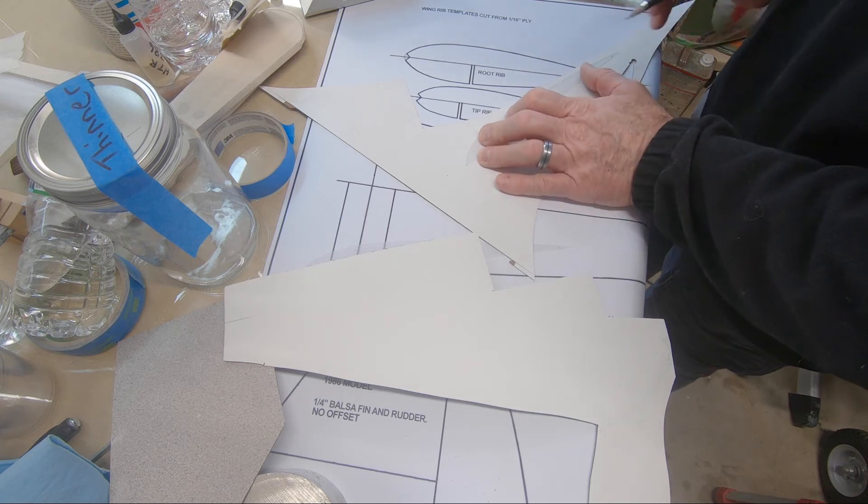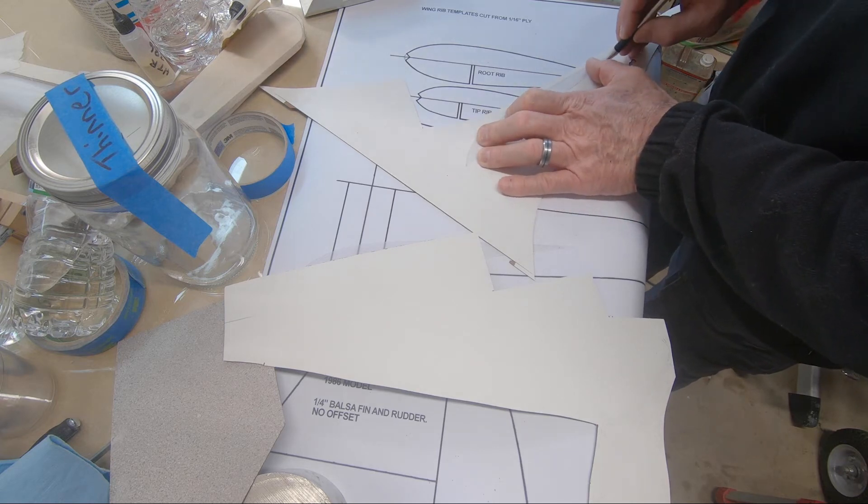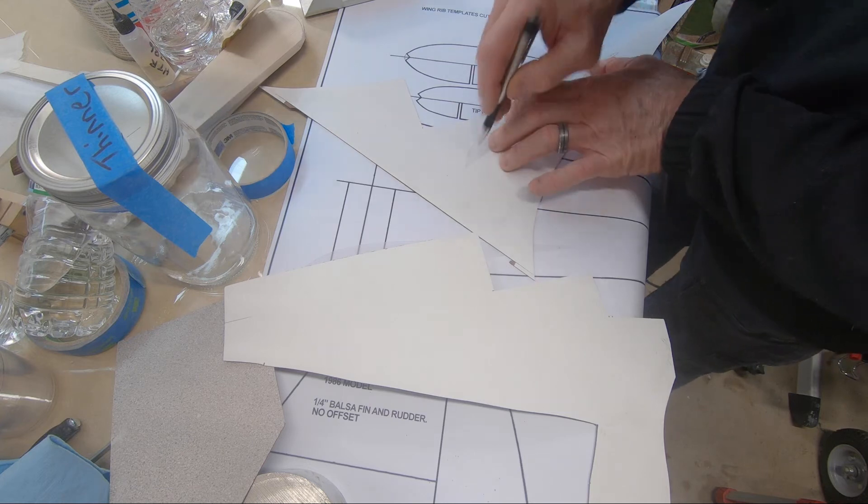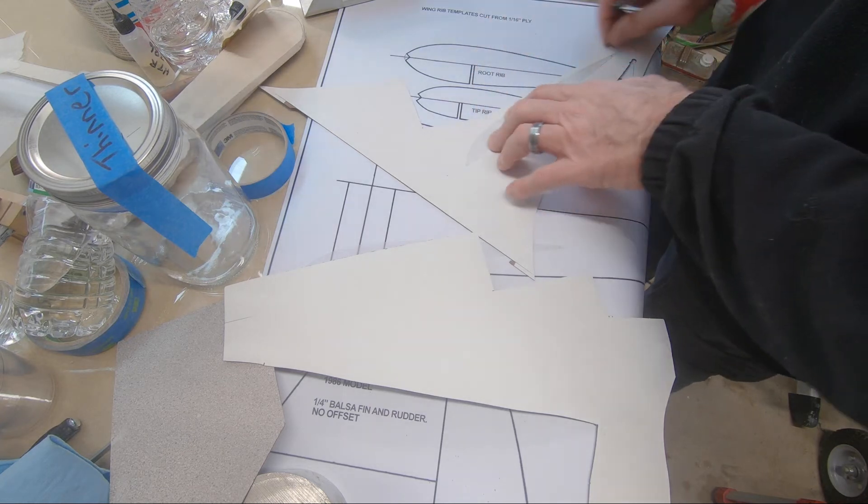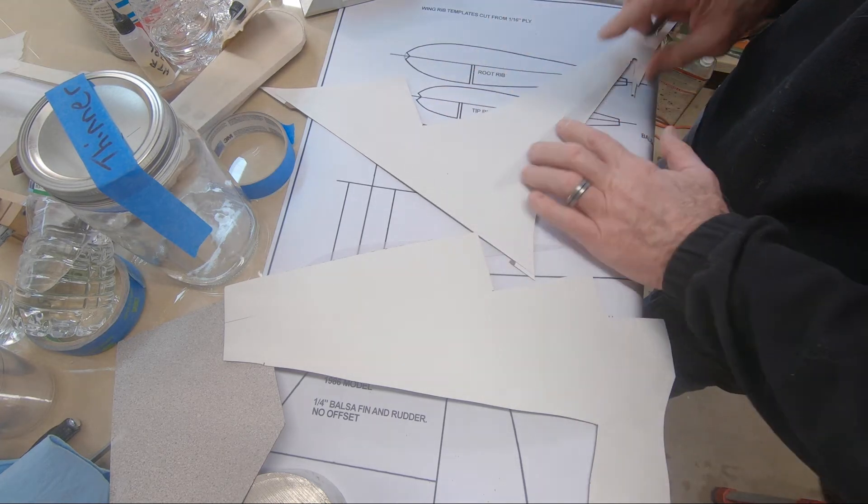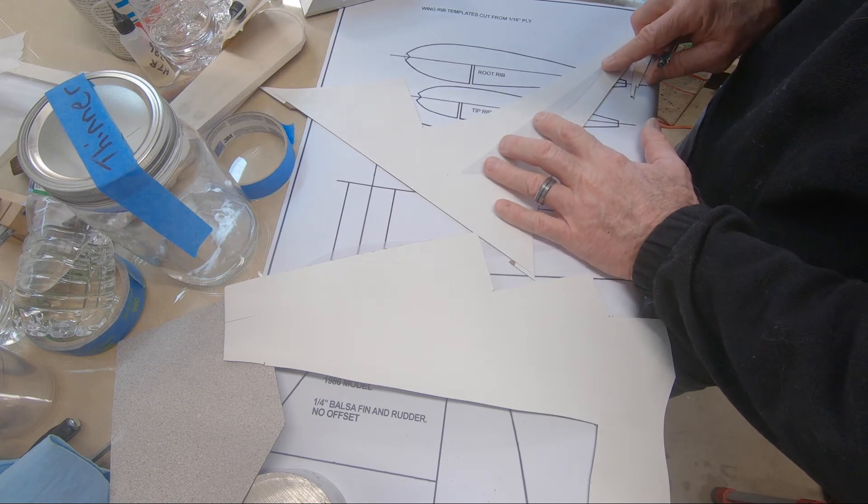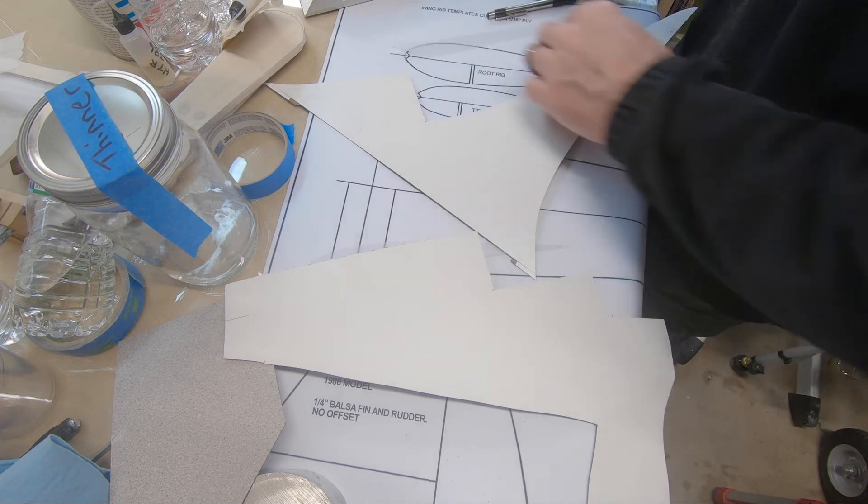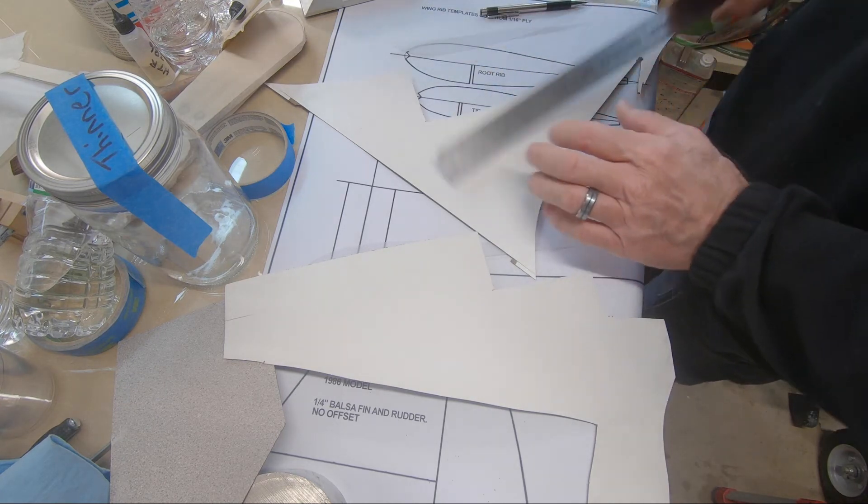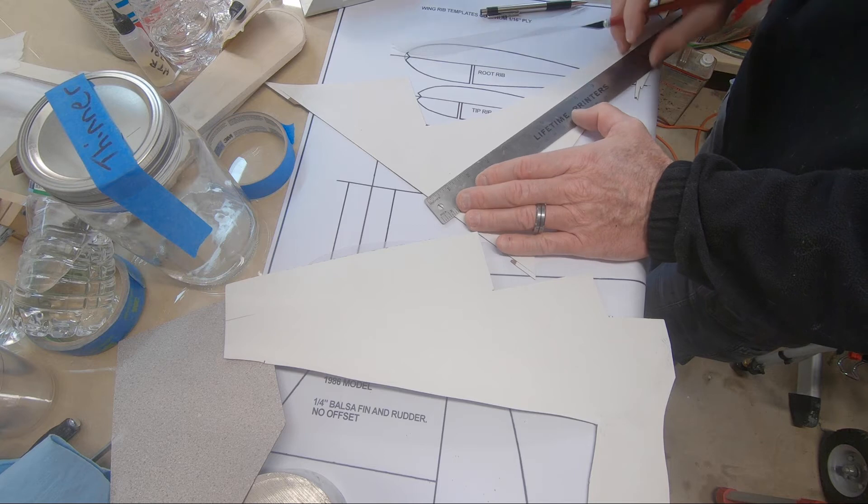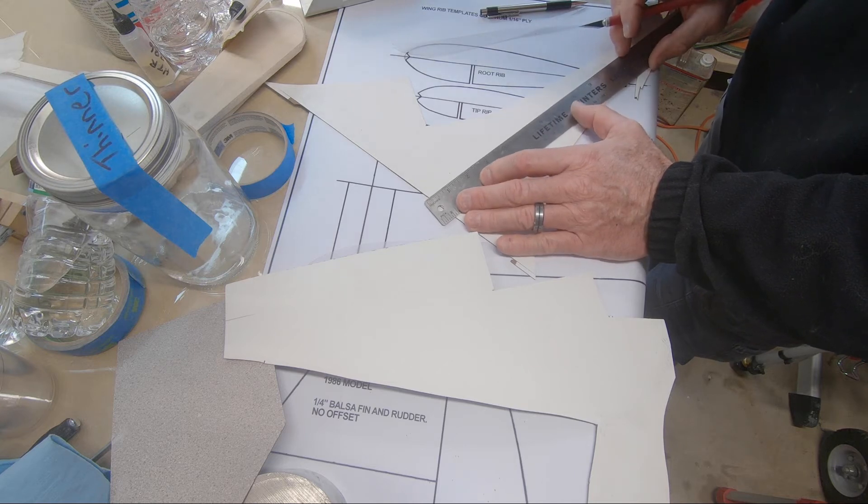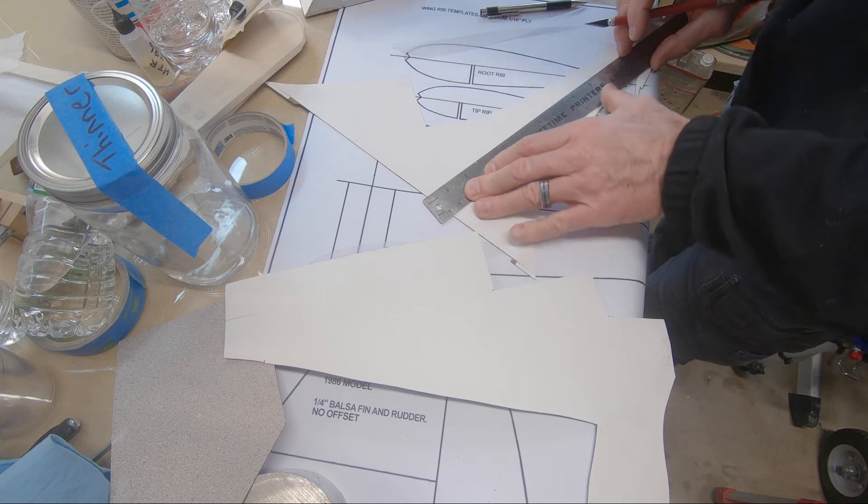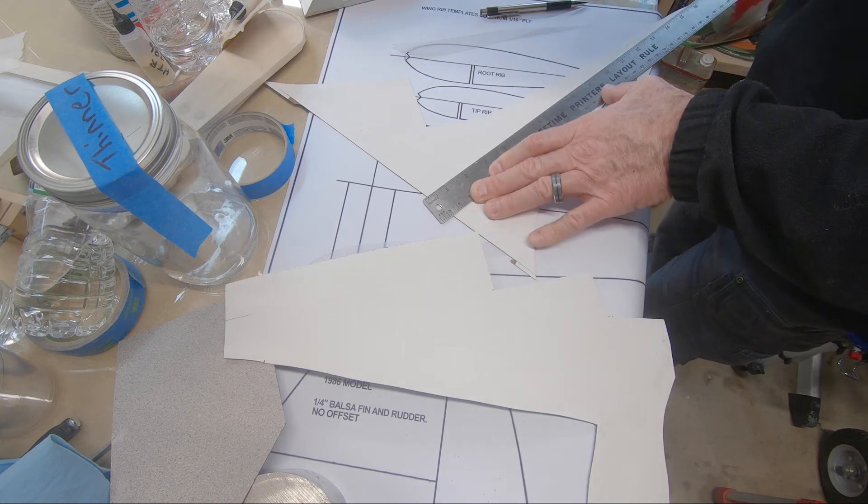So what I'm going to do is establish a center line here. And I'm just marking out where this template is going to go to make sure I have enough material. So the same blade I cut the C-Temp with, I'm going to scribe a line in this Formica.